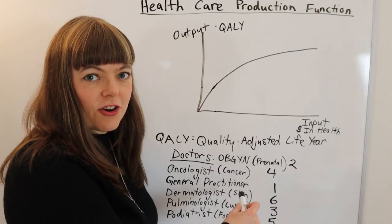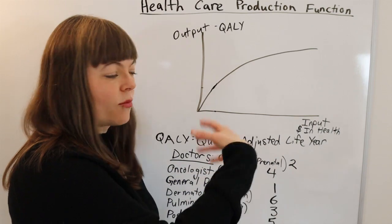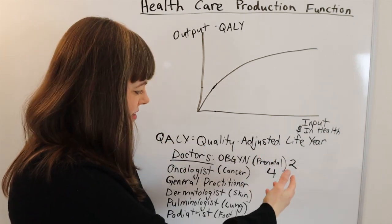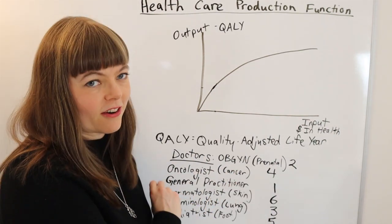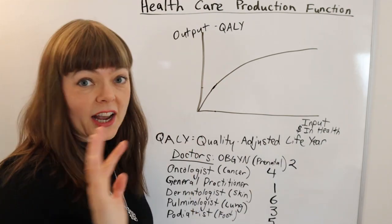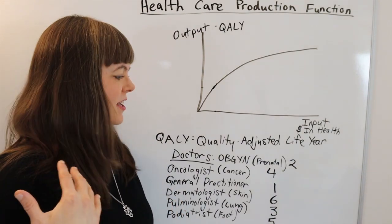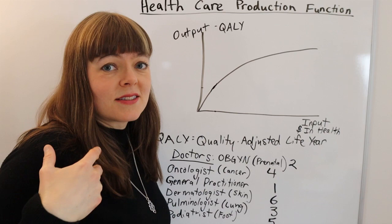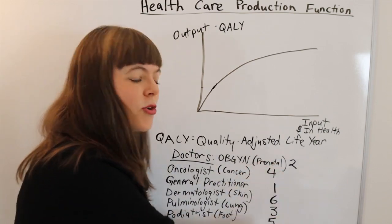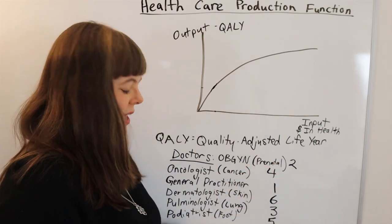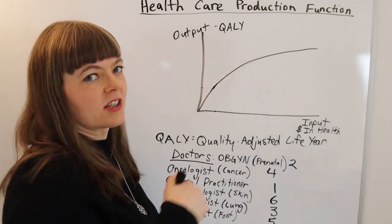I ranked the general practitioner first — meaning if you could only hire one, it's going to be a GP. The OBGYN, the women's and prenatal health doctor, comes second. The third doctor I would hire would be the lung doctor, then the cancer doctor, then the foot doctor. And last — and least in terms of quality adjusted life years — we have the dermatologist for your skin. That's my opinion about these, and a lot of what economists do when they come up with cost effectiveness numbers is argue about these numbers, like how much the pain from foot problems translates into quality adjusted life years.